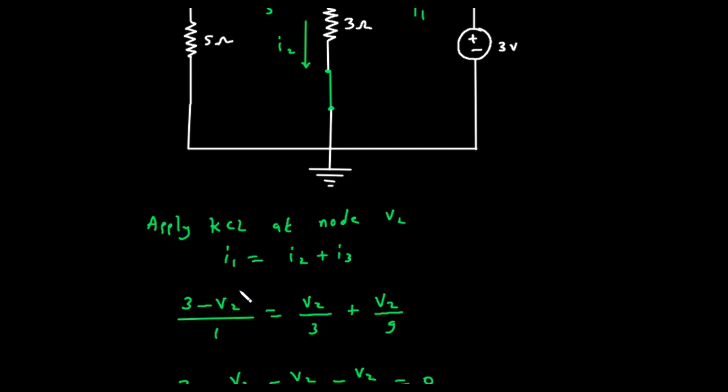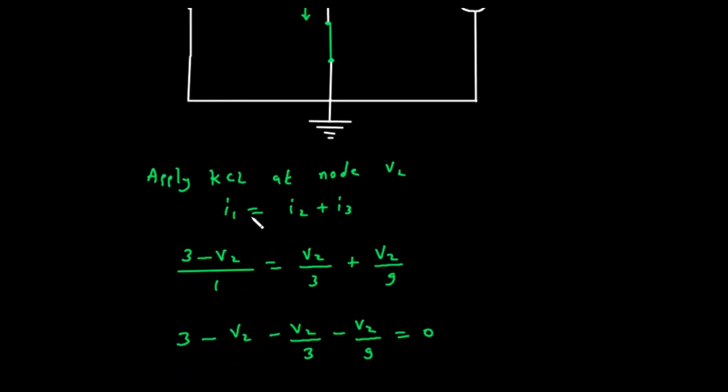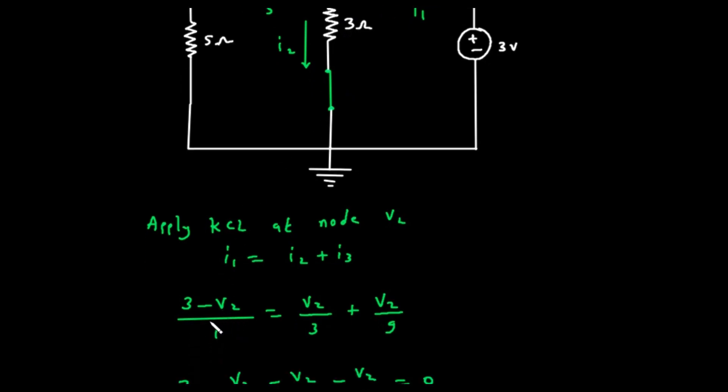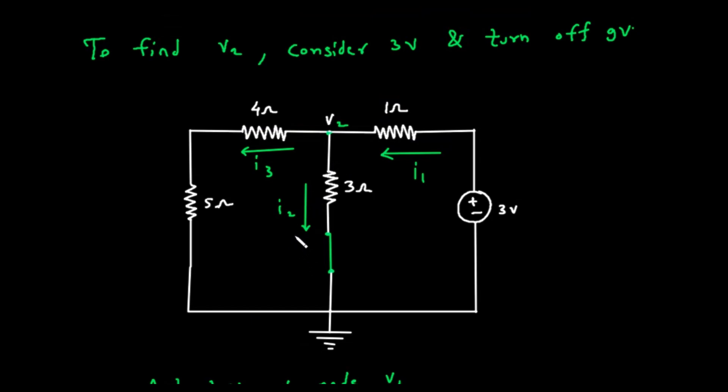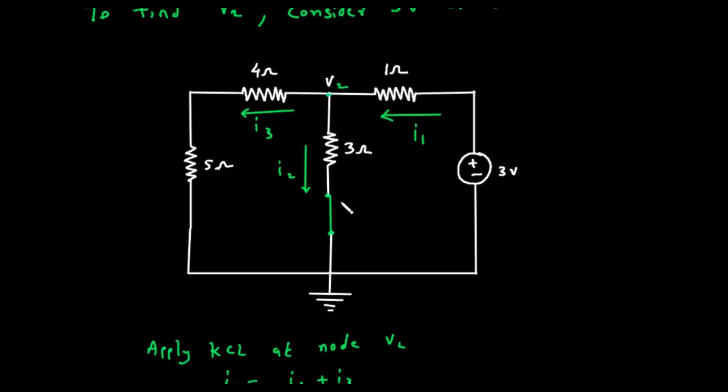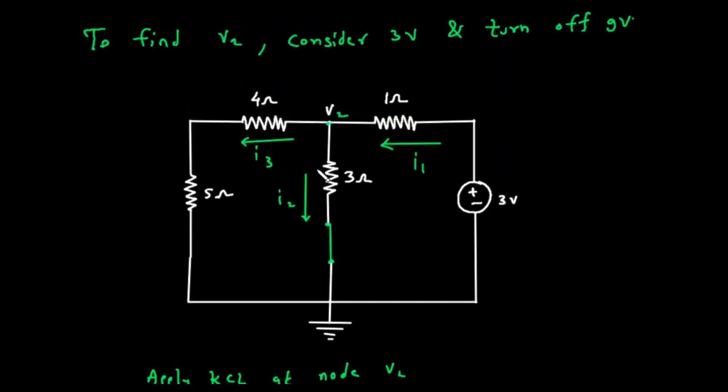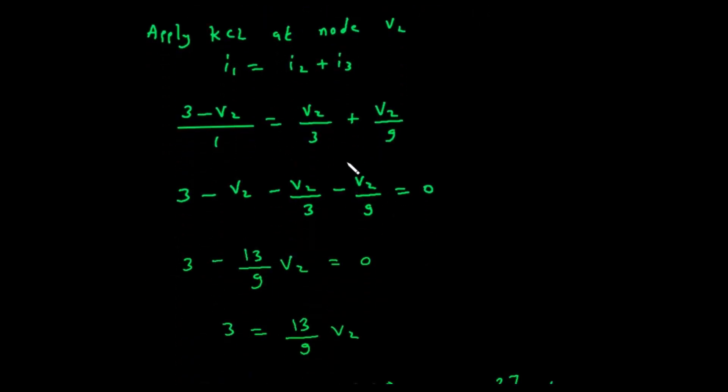Let's write the expression for each current. The incoming current, let's call it I1, comes from the 3 volt source. It flows through the 1 ohm resistor. The voltage difference is 3 volts minus V2. So, I1 equals 3 minus V2 divided by 1. One of the outgoing currents, I2, flows downwards through the 3 ohm resistor to ground. The voltage difference is V2 minus 0, since ground is 0 volts. So, I2 equals V2 divided by 3. The other outgoing current, I3, flows to the left through the 4 ohm and 5 ohm resistors. Just like before, these are in series, so their total resistance is 9 ohms. This entire branch is connected to ground. So, I3 equals V2 divided by 9. Now, we set up our KCL equation. Incoming current equals the sum of outgoing currents. 3 minus V2 divided by 1 equals V2 divided by 3 plus V2 divided by 9.